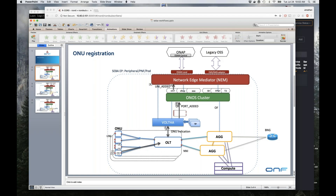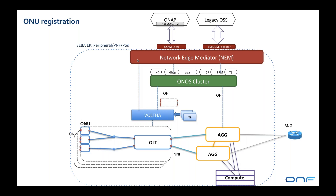Today we're going to show a demo of some of the subscriber provisioning workflows that we've been working on — bringing up an ONU, registering it, authenticating users with 802.1x, and then DHCP relay. To start, I want to show a kind of animation of what's going on so it's easy to follow once we see the details.